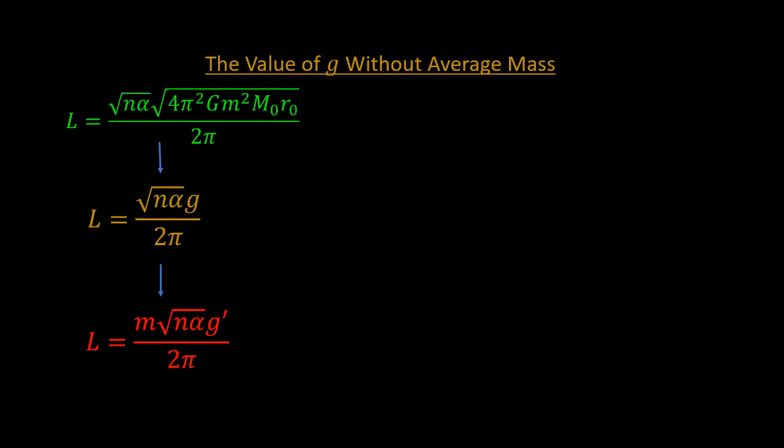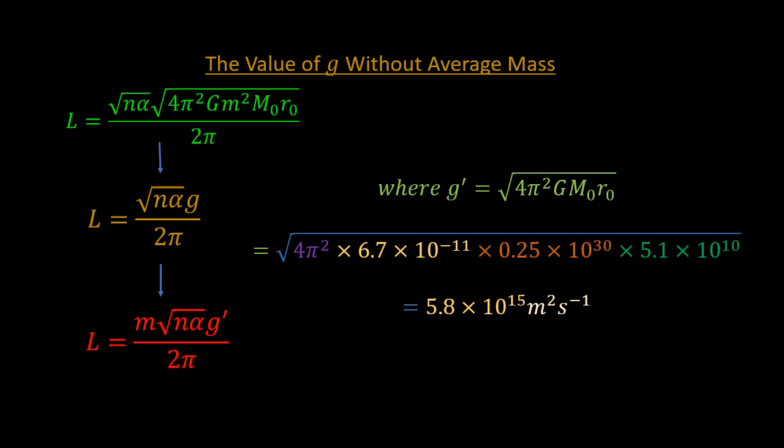G prime is given as this, which is just G but without the mass term, because in this case, planetary mass is no longer a constant. The value of G prime is 5.8 exponential 15 meters squared per second.